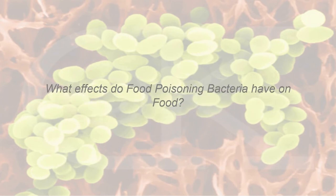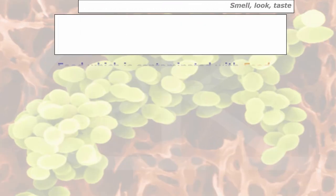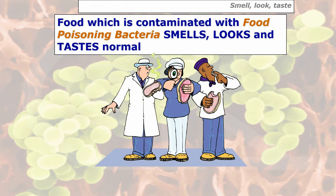What effects do food poisoning bacteria have on food? You might think there'd be a different smell, different taste, or it might look different. But actually, food which is contaminated with food poisoning bacteria smells, looks, and tastes normal. That's very important — a question could come up: how do we know food poisoning bacteria are on or in food? We don't, because everything looks and smells normal.